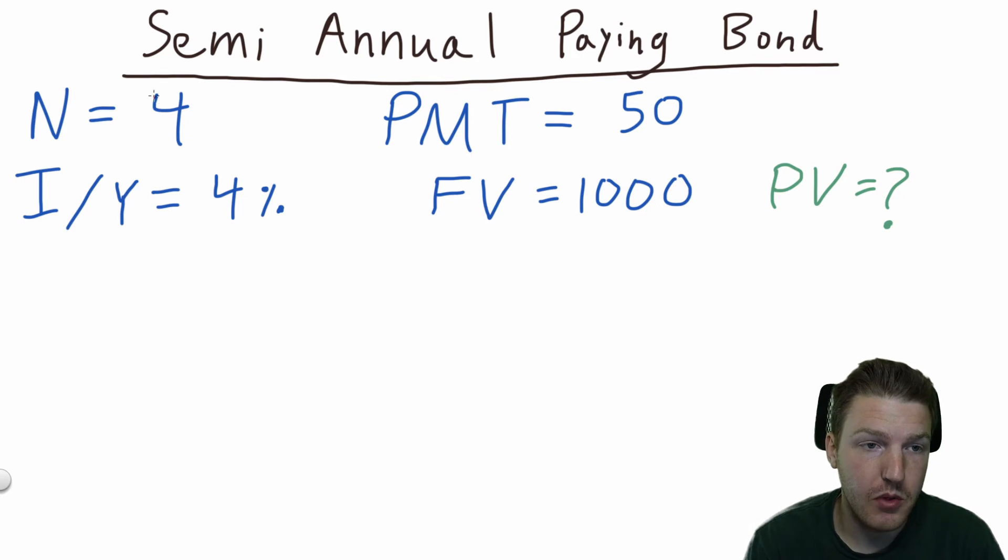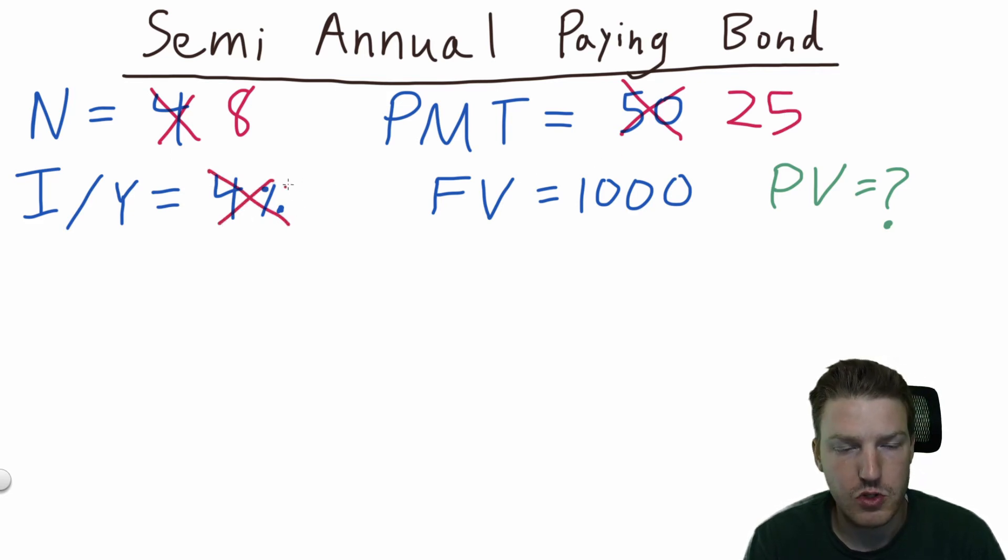Well, we would have to double the number of payment periods. So instead of four, we'll go to eight. Each payment would be cut in half. So instead of paying $50 once per year, we're actually paying $25 twice per year. And now the interest, the yield to maturity for each period in this goes, gets cut in half from 4% to 2%.